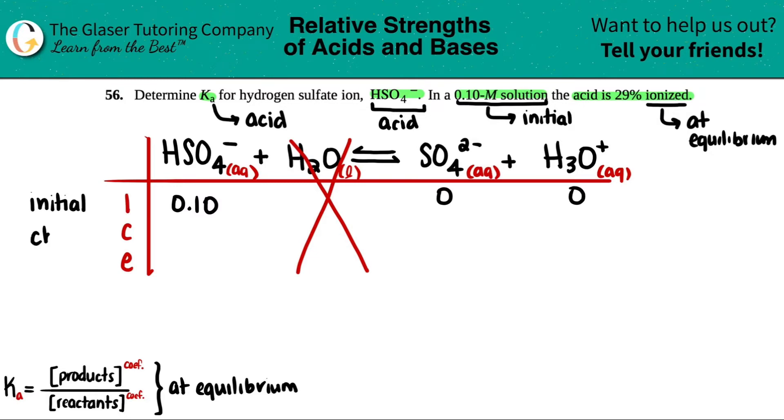C stands for change, the change in concentration. How much did this drop and how much did these increase? Remember, if you start with nothing, you can only go up from there. You can never have negative molarities. So I know the product side has to be plus and plus. Because of that, the reactant would be minus. But at the moment I don't really know how much, so let's use a variable X.